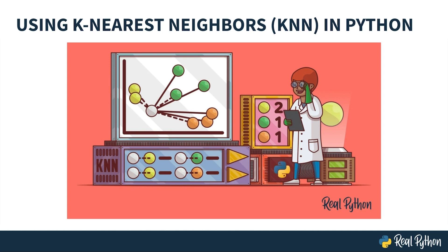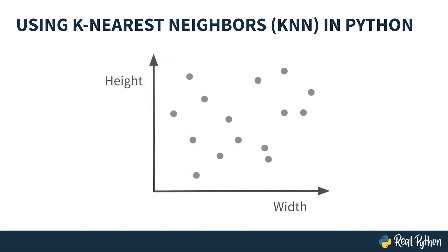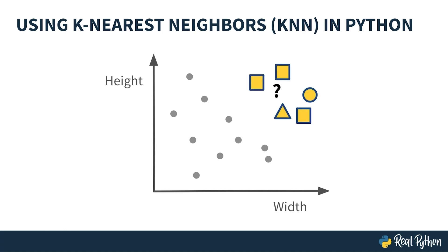I'm delighted to discuss K-Nearest Neighbors with you because it's one of the most flexible and intuitive machine learning algorithms. In many data science problems, you'll present an algorithm with a dataset of known features like width and height. When a new observation arises, you'll want to use the information you currently have to make a prediction for it. K-Nearest Neighbors can help you make such a prediction, and it does so by examining the new data point's closest neighbors.